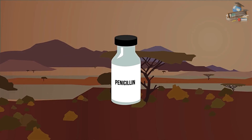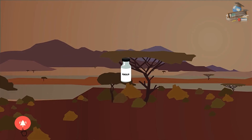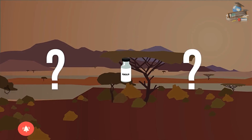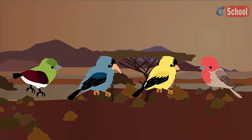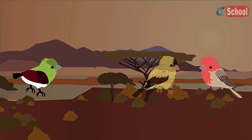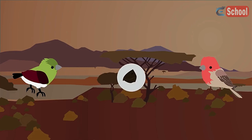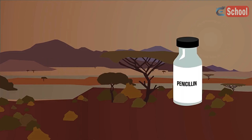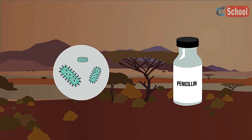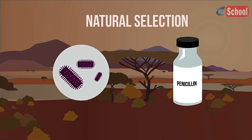Nowadays, antibiotics are used more sparingly and scientists are attempting to find other ways to treat infections. But how do you suppose they can do this? So from this video, you should know that variation within a population means some individuals have an increased chance of survival and passing on characteristics onto their offspring. You have also learned that inherited antibiotic resistance in bacteria poses problems for modern medicine and is an example of adaptation and natural selection in action.